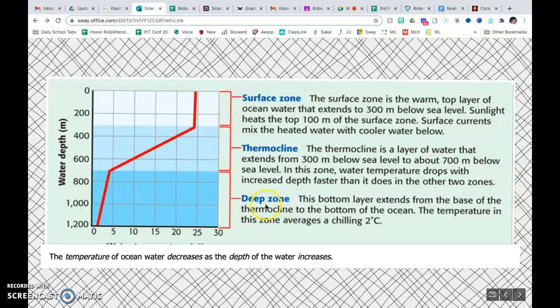Then above the deep zone, different word here, thermocline. Think about it climbing. The thermocline is the layer of water that extends from about 300 meters below sea level to about 700 meters below sea level. In this zone, water temperature drops with increased depth faster than it does in these two zones. And you can see that depicted. It's going down.